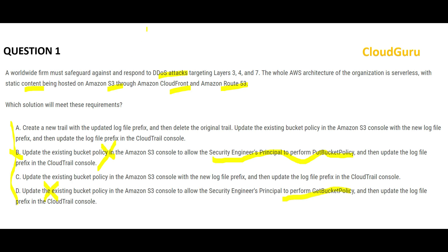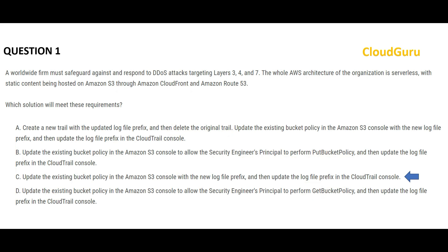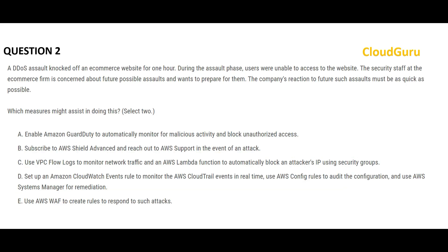The answer has to be between A and C. The problem with A is it asks you to delete the original trail. If a DDoS has happened and you want to analyze what happened and who caused it, deleting the trail means you lose all that information — so A is wrong. That leaves us with only option C. This answer ensures you are just updating the existing bucket policy with the new log fix path in the S3 bucket, without replacing or deleting any original trails. This is my final answer.